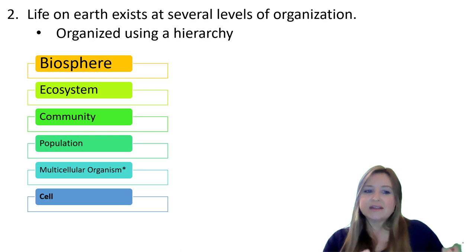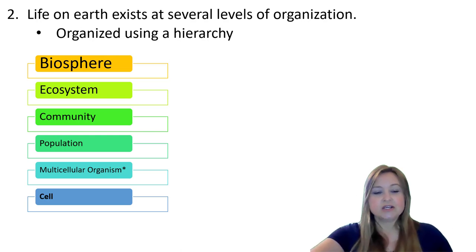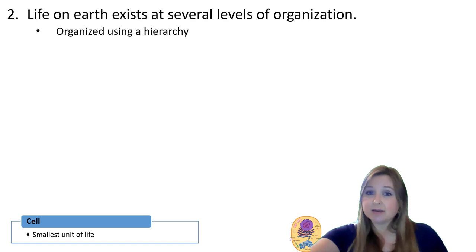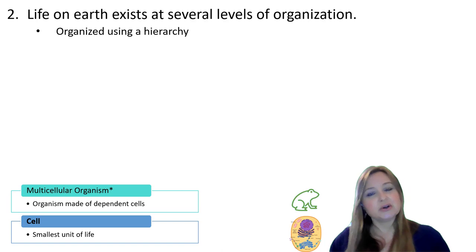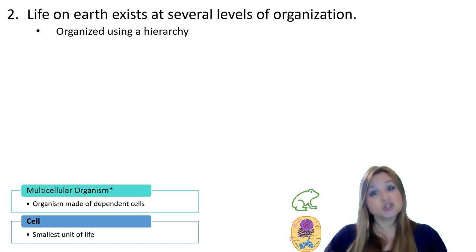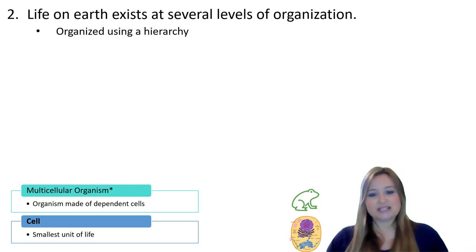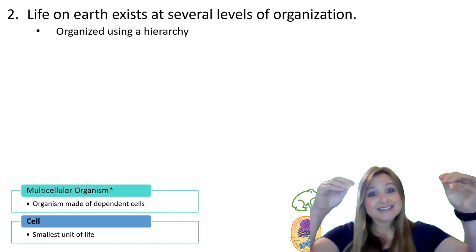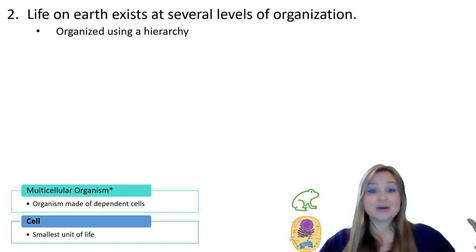The cell is the smallest unit of life. Cells can come together in many different organisms to form multicellular organisms, which have two or more cells — and like us, trillions of cells all working together. Cells within multicellular organisms can form tissues, those tissues can create organs, and those organs all come together to form the entire multicellular organism. In our example here, that's a frog.